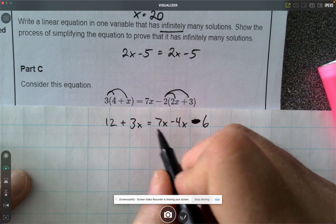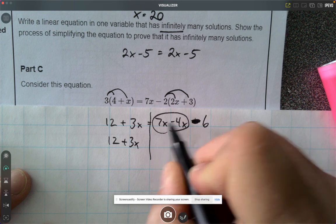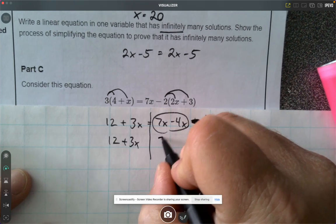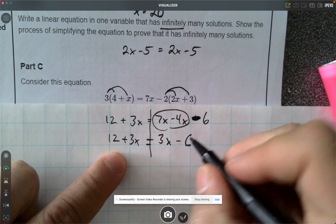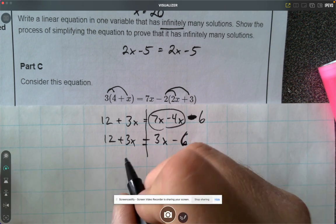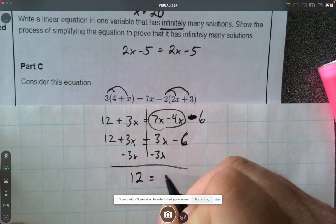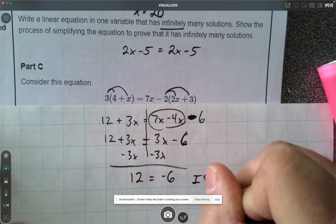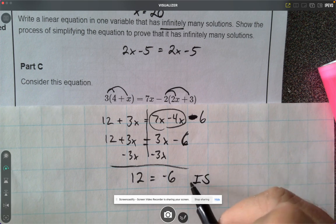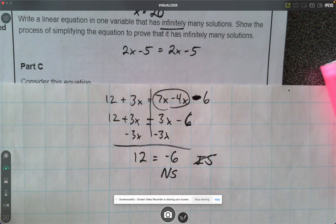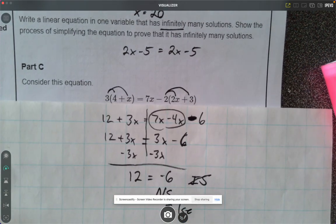I can combine like terms on this side here. So I get 12 plus 3x, and over here, 7x minus 4x, that's also 3x. My spidey senses are going off. I got 3x on both sides here. So then I minus 3x from both sides, and I'm left with 12 equals negative 6. So that's infinite solutions. Not really, it's not infinite solutions. Math by mistake. That is no solution. When that's a false statement, you say no solution. I hope you understood that one.